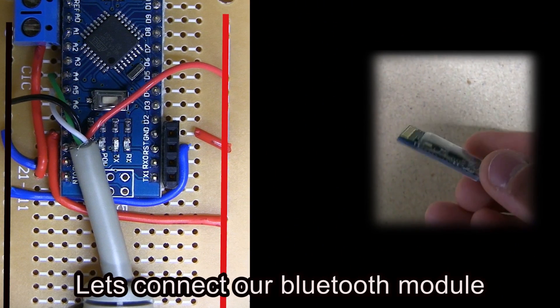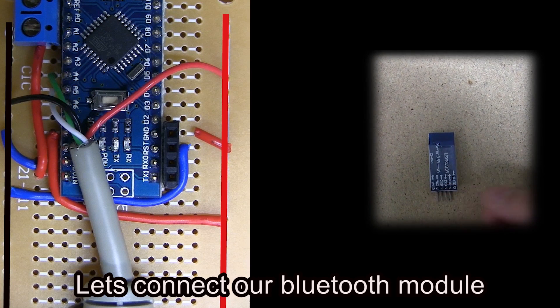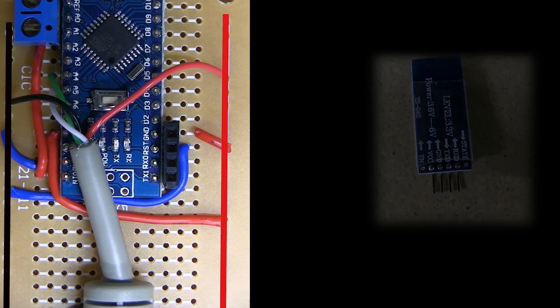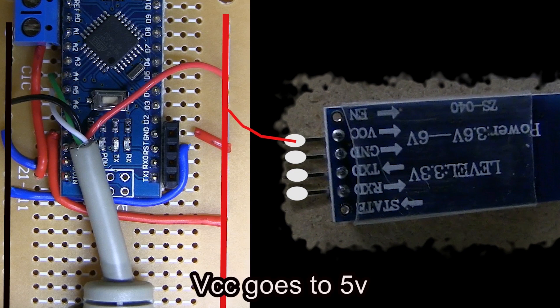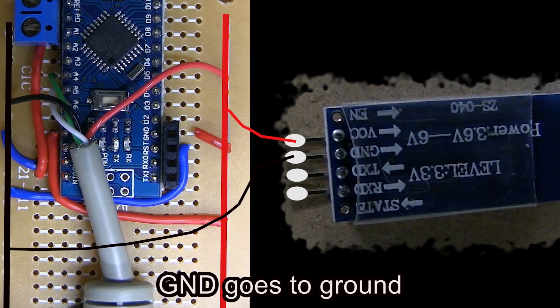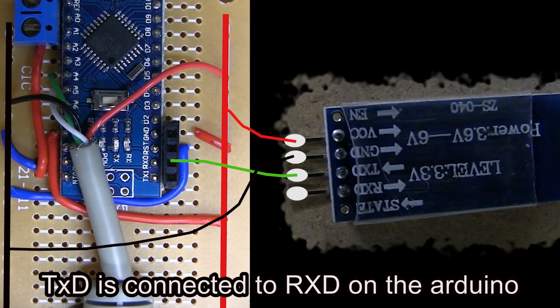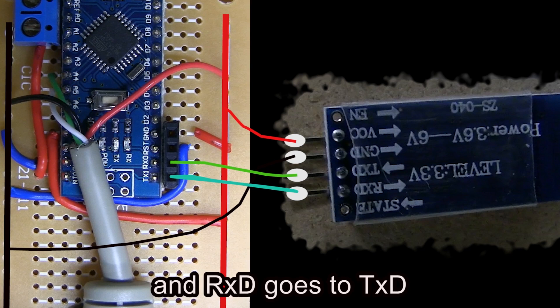Now let's connect our Bluetooth module. VCC goes to 5V, ground goes to ground, TXD is connected to RXD on the Arduino and RXD goes to TXD.